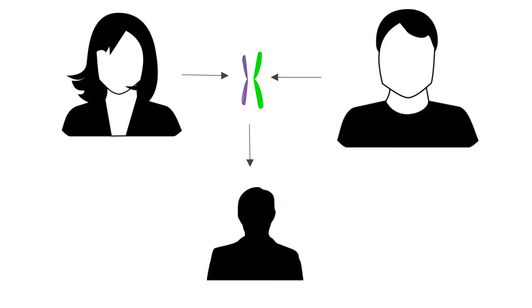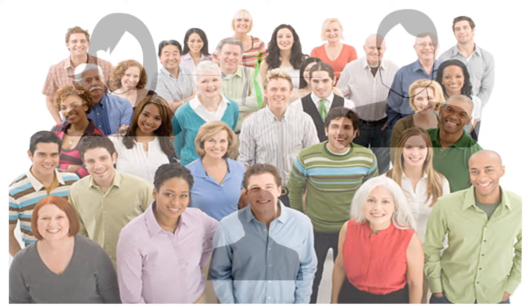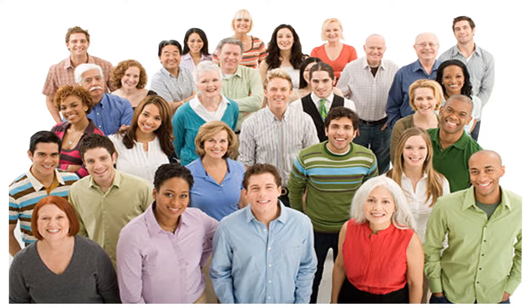Genes are information in the form of DNA. Each gene is made of two copies, one from your mom and one from your dad. Your DNA is unique because it is a different combination of these copies, which is why no two people have the exact same traits. Traits are what you see, like the color, size, or shape of a living thing.